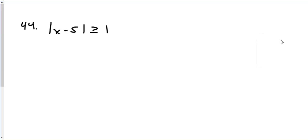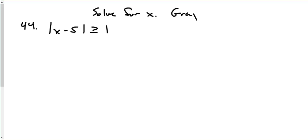In these next tutorials, I'm going to go through three problems across three different videos. This is our first problem in which we're going to solve for an absolute value inequality. We're going to solve for the variable — in this case, solve for x — and then we're going to graph our solution.